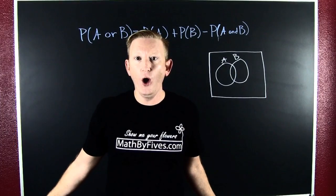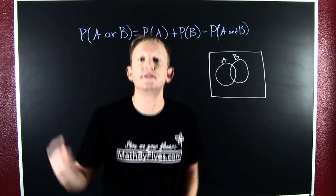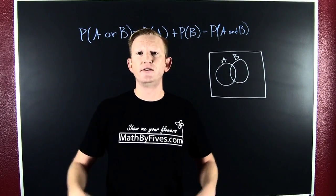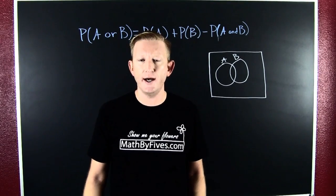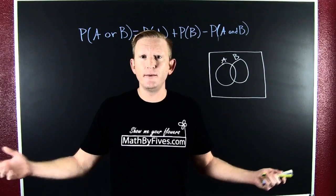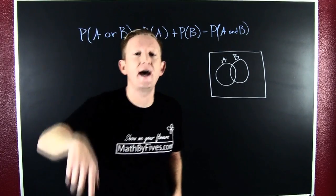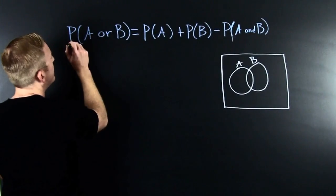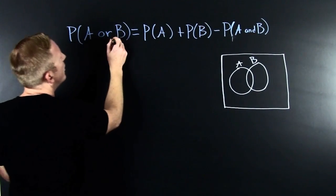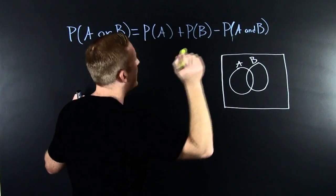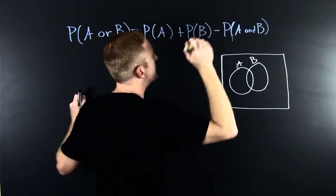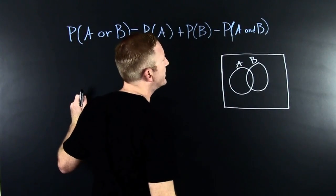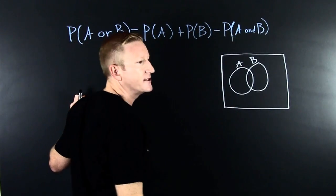So we need to put together events in a union. We have a formula. The probability of A or B is the probability of A plus the probability of B minus the probability of their intersection.